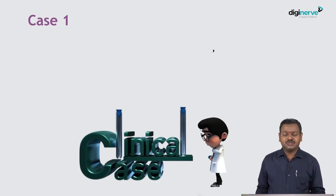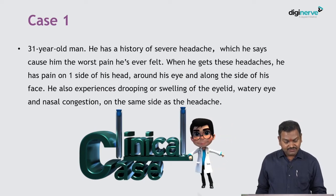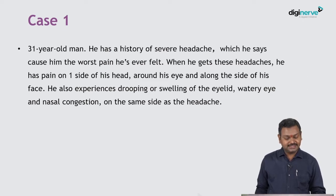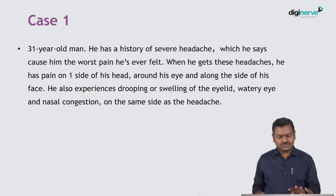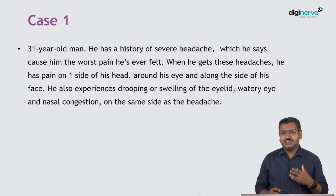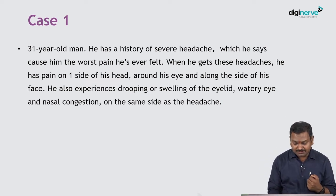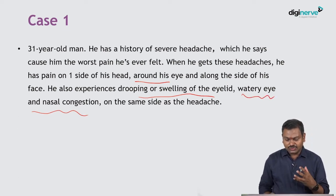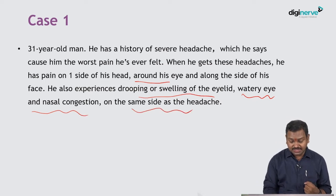The first case is a 31-year-old man who comes with a history of severe headaches which he says is the worst pain he has ever felt. When he gets these headaches, one side of the head is painful around the eye along with the side of his face. He also experiences drooping or swelling of the eyelid, watering of the eyes, and nasal congestion on the same side. These are autonomic features associated with this presentation.